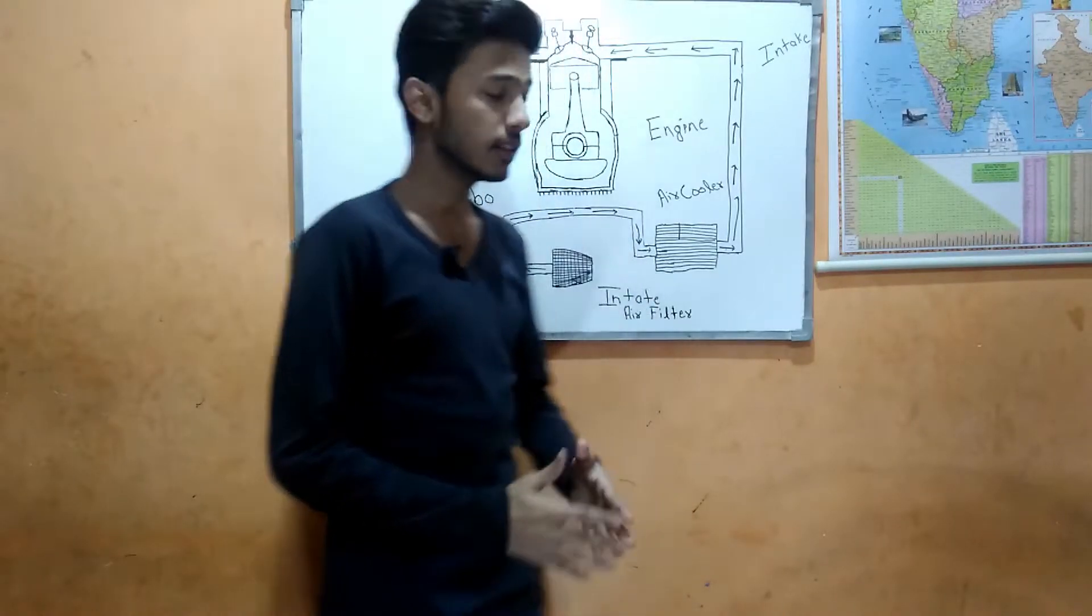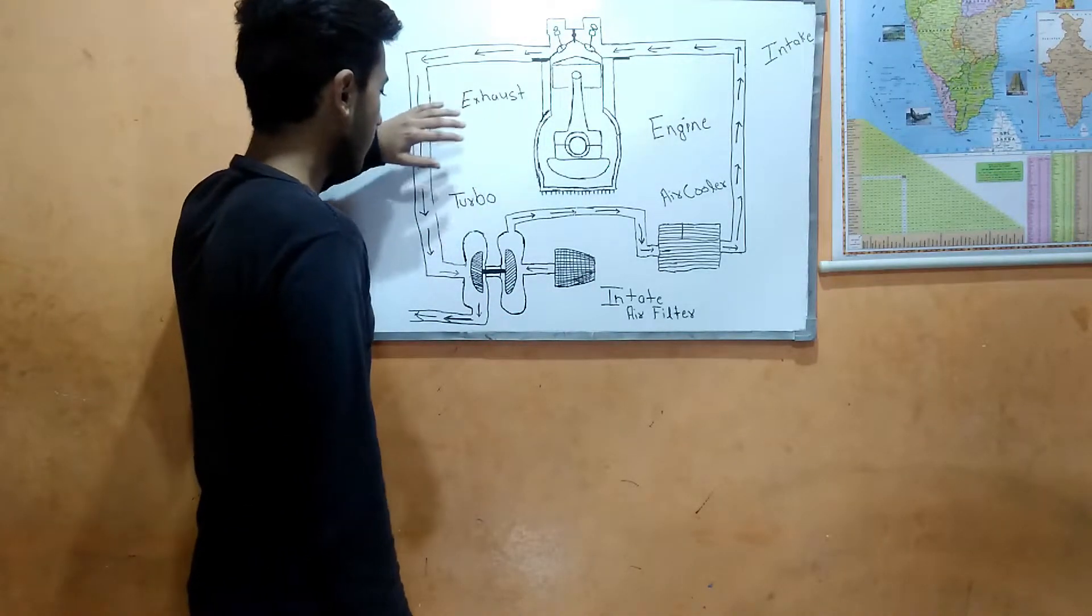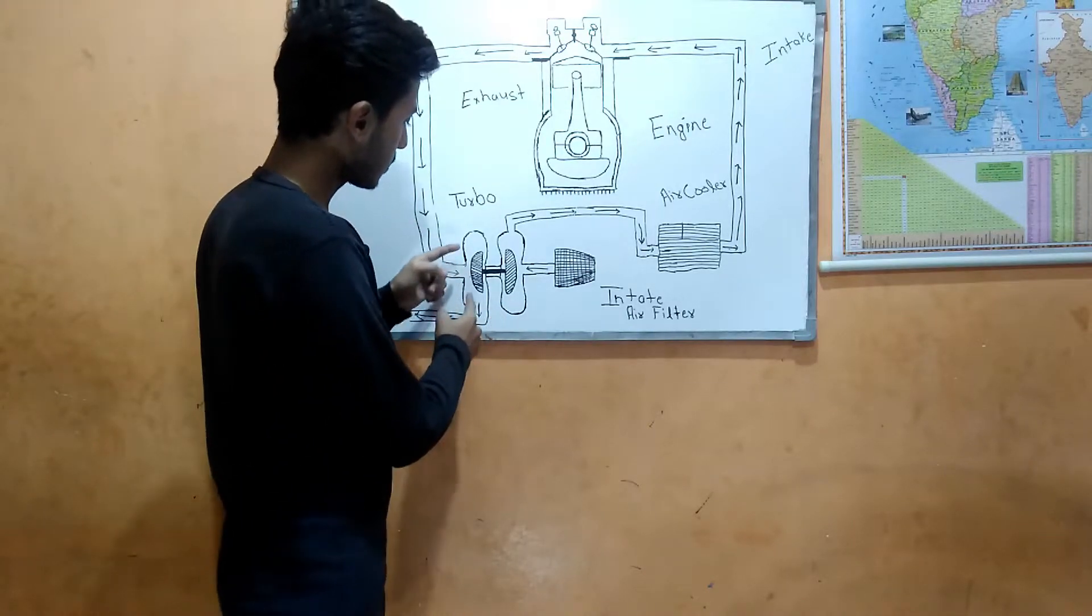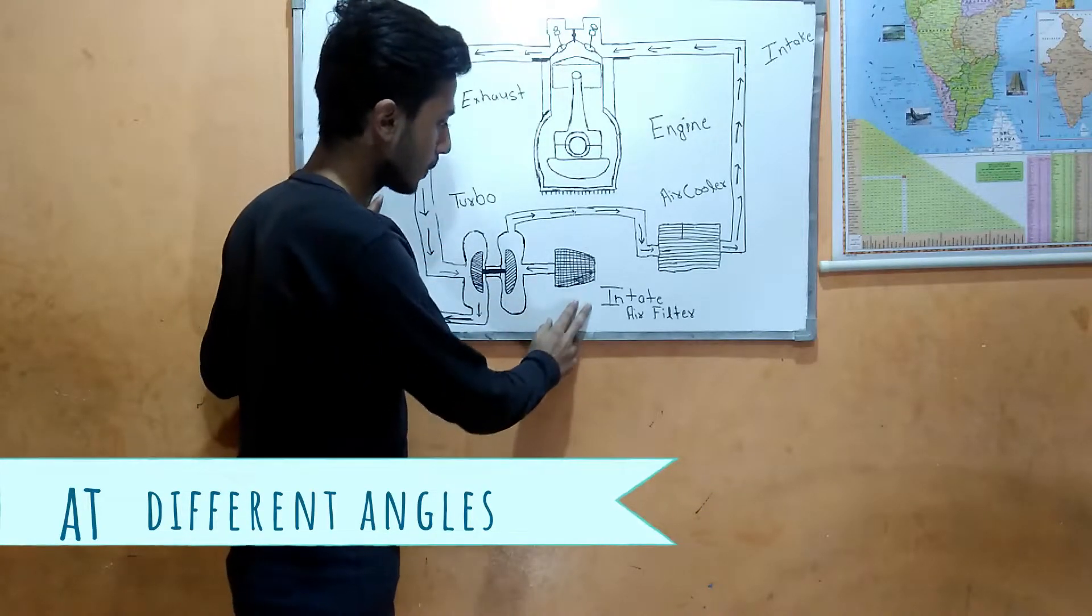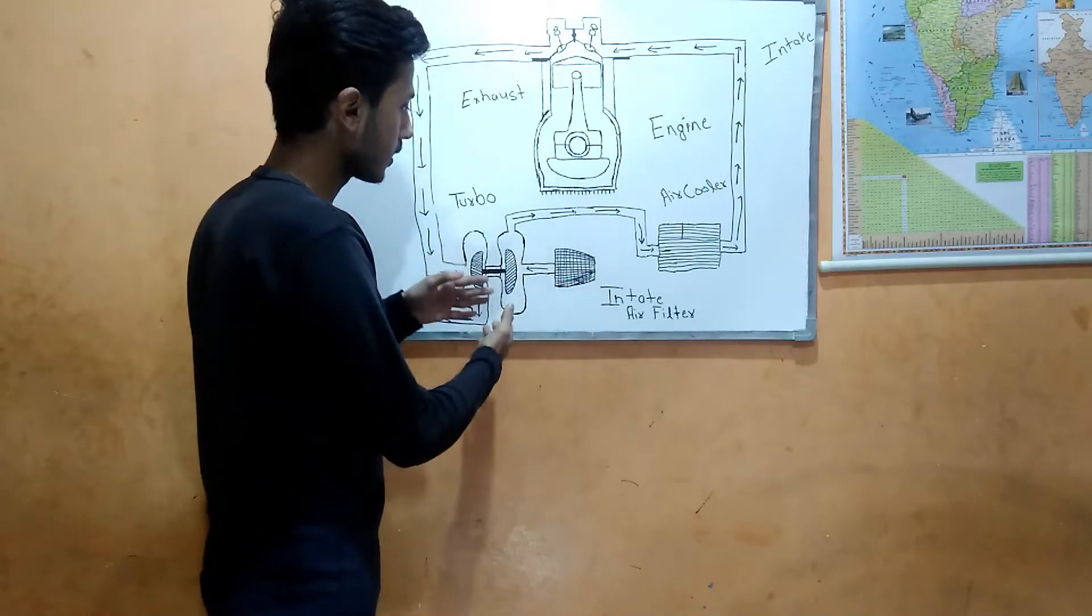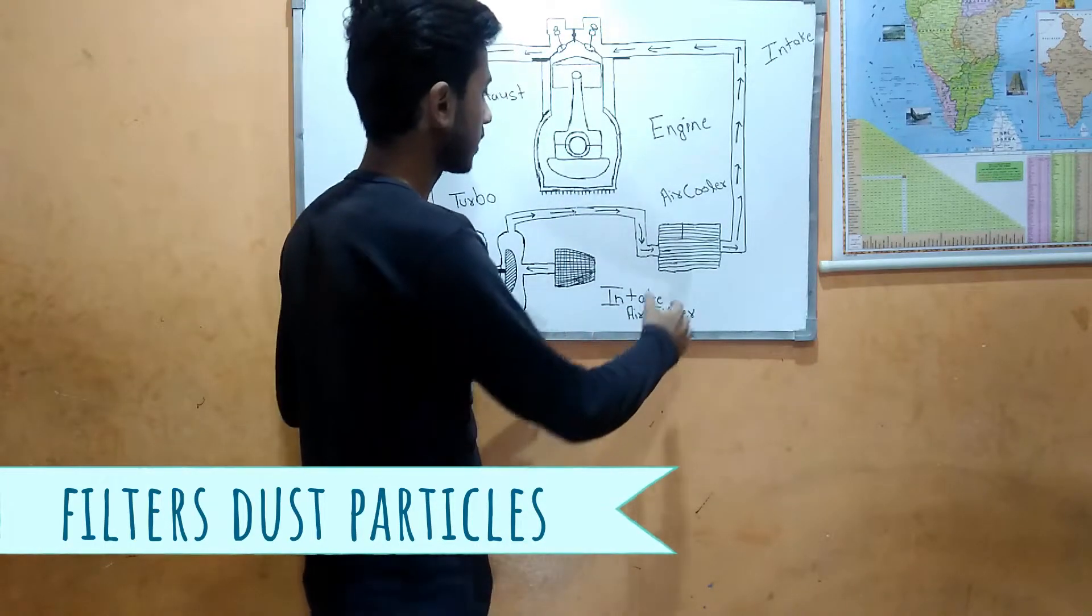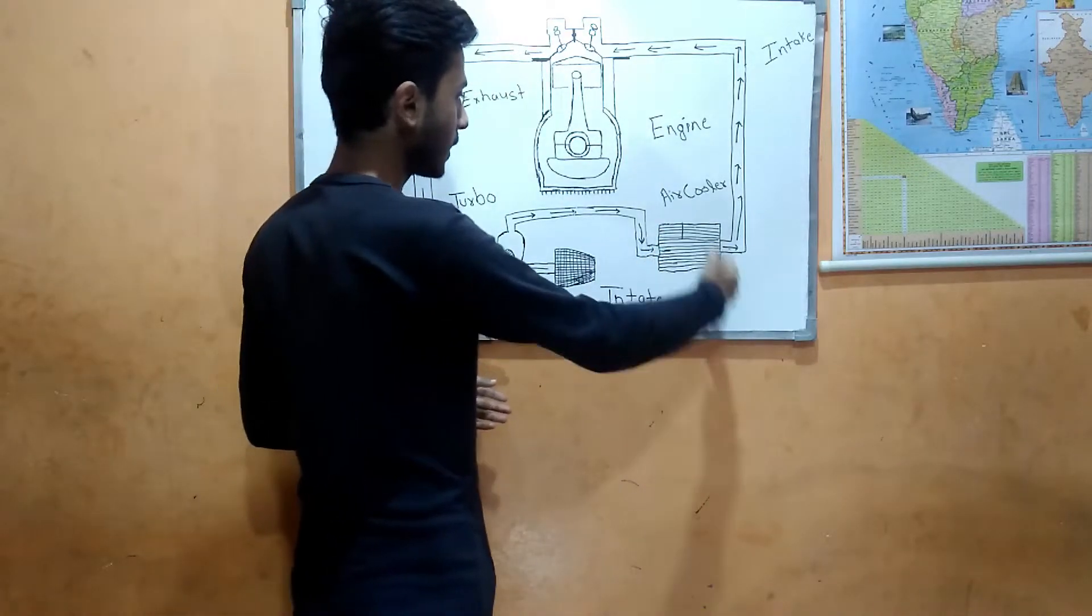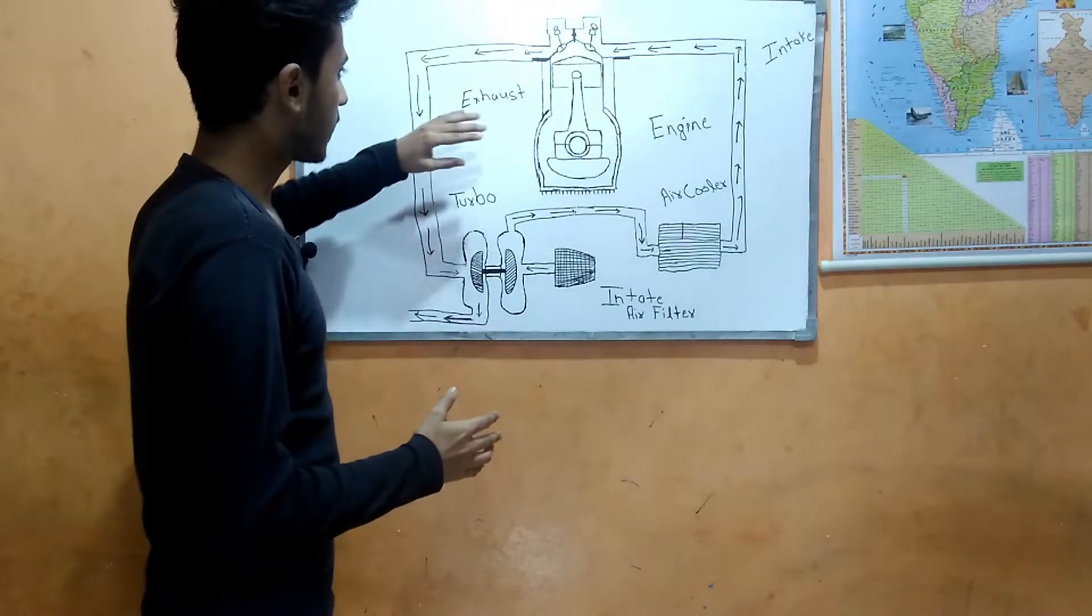All right guys, let's go to the topic. As you can see, I've made a drawing here of a turbocharger which has two turbines and these blades are lined up at different angles. Here we have an intake air filter and this is our air cooler. I'm going to tell you the reason why the air cooler is actually here.